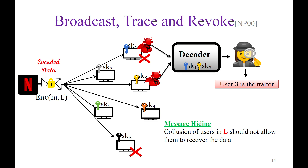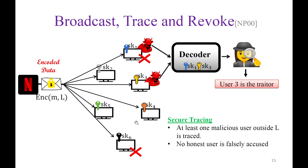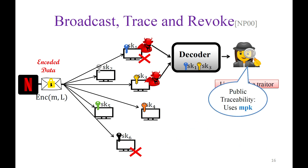This notion provides multiple guarantees. First, message hiding: no matter how many users in L pool their keys, they cannot learn the data from the ciphertext. Second, secure tracing: the tracing algorithm will output at least one valid malicious user — one outside L. Third, no honest user will be falsely accused. We study this primitive in two notions of traceability. Public traceability uses the master public key, so anyone can run the tracing algorithm. Private traceability uses the master secret key.